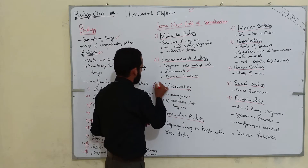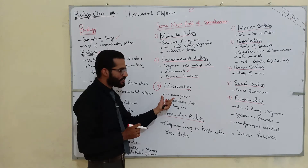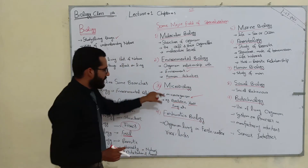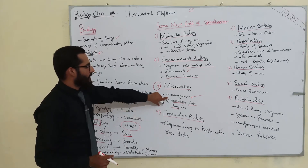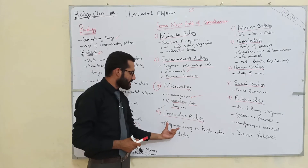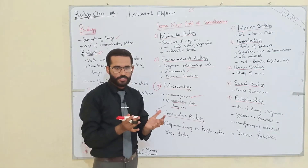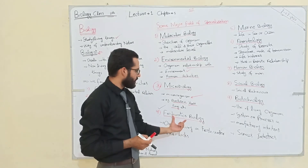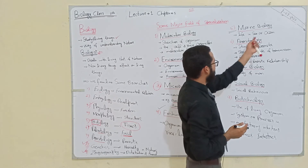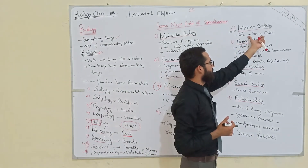Microbiology is the third major field of specialization. It deals with the study of microorganisms such as yeast, bacteria, and fungi. Freshwater biology is the branch of biology that deals with organisms living in freshwater resources like rivers and lakes. Marine biology deals with organism life in seas and oceans.